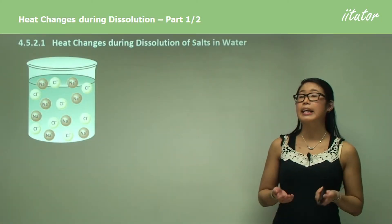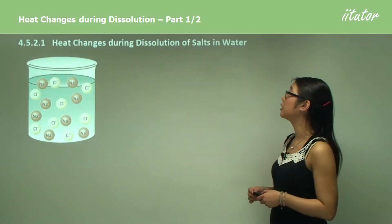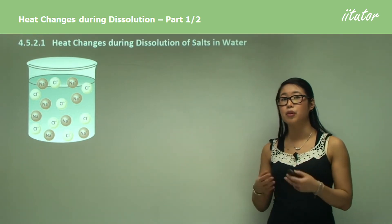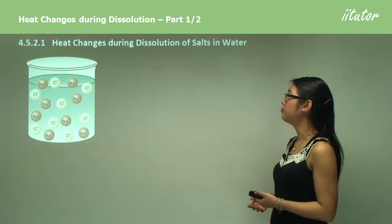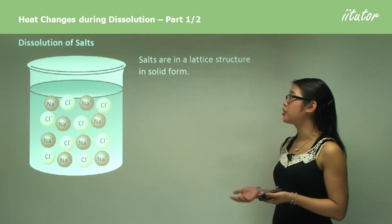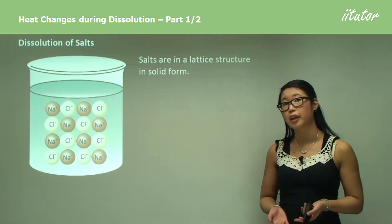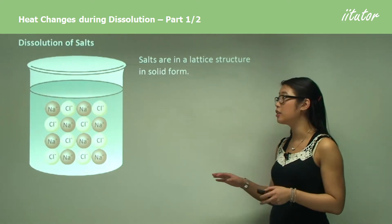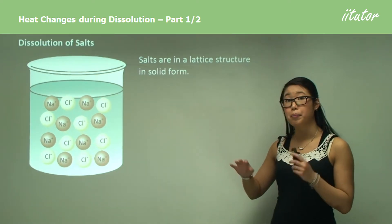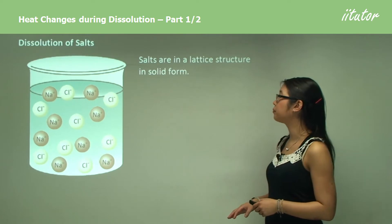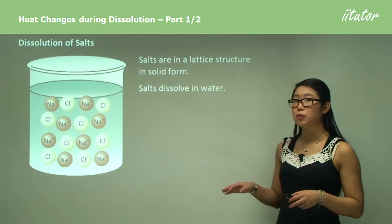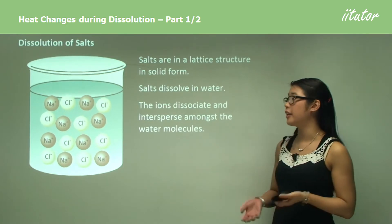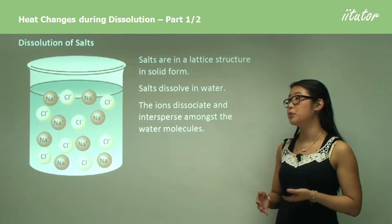We're specifically looking at heat changes during dissolution of salts in water. Dissolution of salts means we're dissolving a salt into water. Salts are in a lattice structure in solid form, which is a very uniform and specific structure of alternating positive and negative ions. When we put salts into water, they dissolve and the ions dissociate and intersperse between the water molecules.